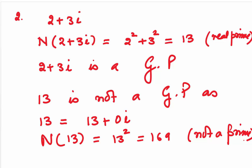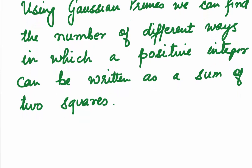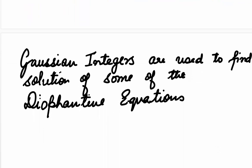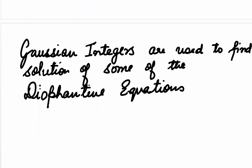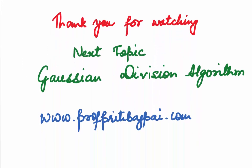2 plus 3i which gives norm 13 is a Gaussian prime, but 13 itself is not. Why do we study Gaussian primes? Using Gaussian primes, we can find the number of different ways in which a positive integer can be written as a sum of two squares. Gaussian integers are also used to find solutions of some Diophantine equations. Thank you for watching. Our next topic will be the Gaussian Division Algorithm. For detailed notes, you can check the website.